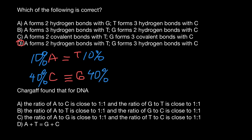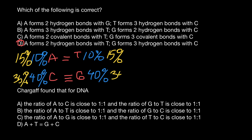Let's change the numbers. For example, let's say we have 15% adenine. That means we are going to have 15% thymine in our double-stranded DNA. Together it's 30%, so the remaining cytosine and guanine make 70% — meaning 35% cytosine and 35% guanine.